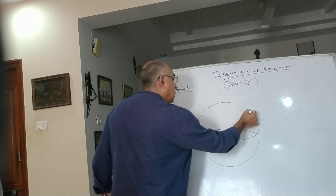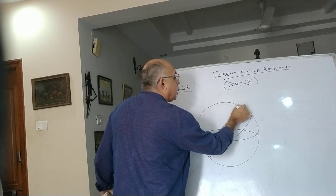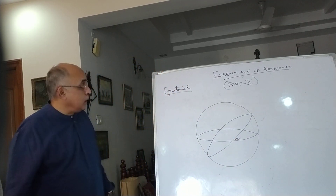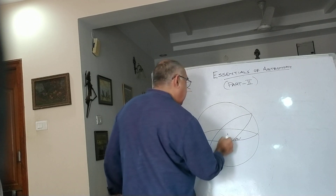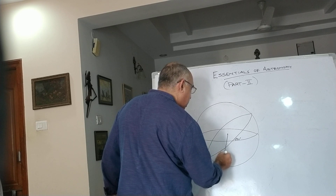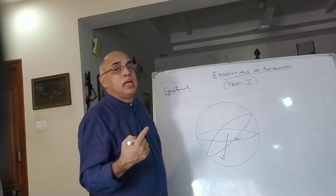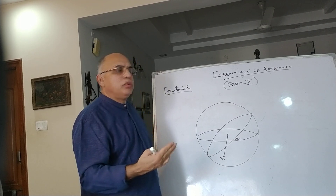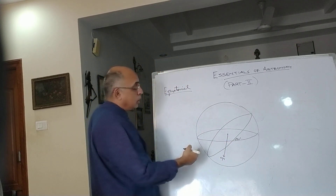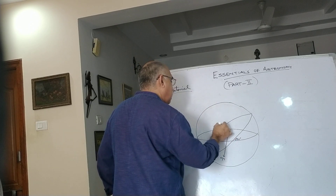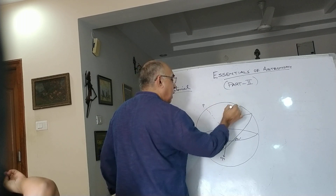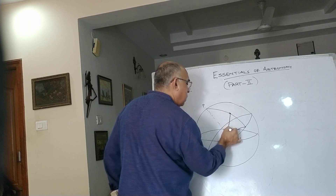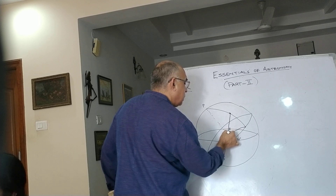The horizon and the equator are inclined at 23 and a half degrees. The first point of Aries is in a specific direction, and due to the precession of Earth's axis, the first point of Aries has now shifted to the Pisces constellation. But it is still called the first point of Aries because right ascension is measured from this reference line. For any object, I draw a great circle — this gives the declination — and from the first point of Aries I measure the angle to get the right ascension.